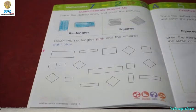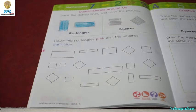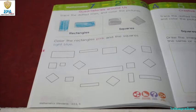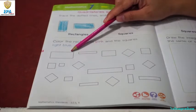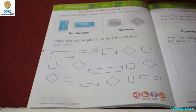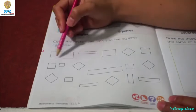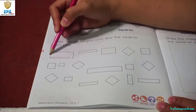So, let's identify where are the rectangles and where are the squares. What shape is this? Rectangle. Very good! So, we are going to color the rectangle pink.